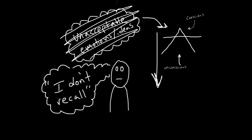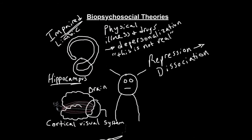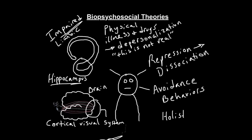Behavioral theorists viewed dissociation as a learned behavior. Essentially, the individual learns that avoidance behavior provides protection from a painful experience. After repeated experiences, this avoidance pattern is reinforced. Humanistic theorists view the individual as a composite of life experiences, biological factors, psychological factors, sociocultural factors, and interpersonal interactions.